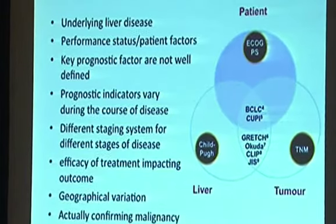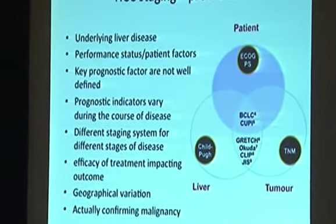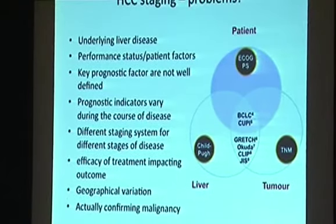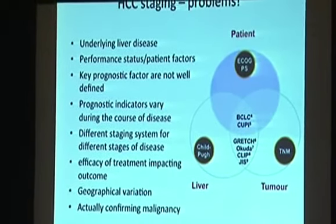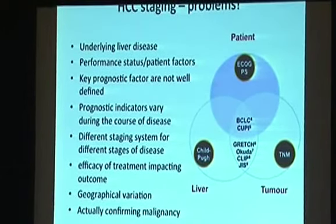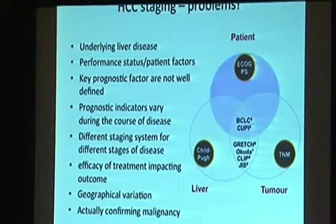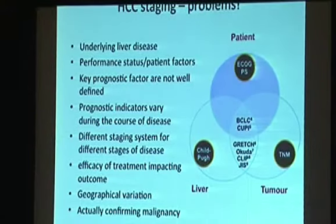That's where the simplicity ends and the problem begins with regards to HCC. There are a lot of factors which make staging very complex and multifaceted. The underlying cirrhosis and the performance status of patients are the two most important confounding factors. Certain prognostic factors are not well defined, and prognostic indicators like albumin levels might vary during the course of the disease, causing further problems for staging.